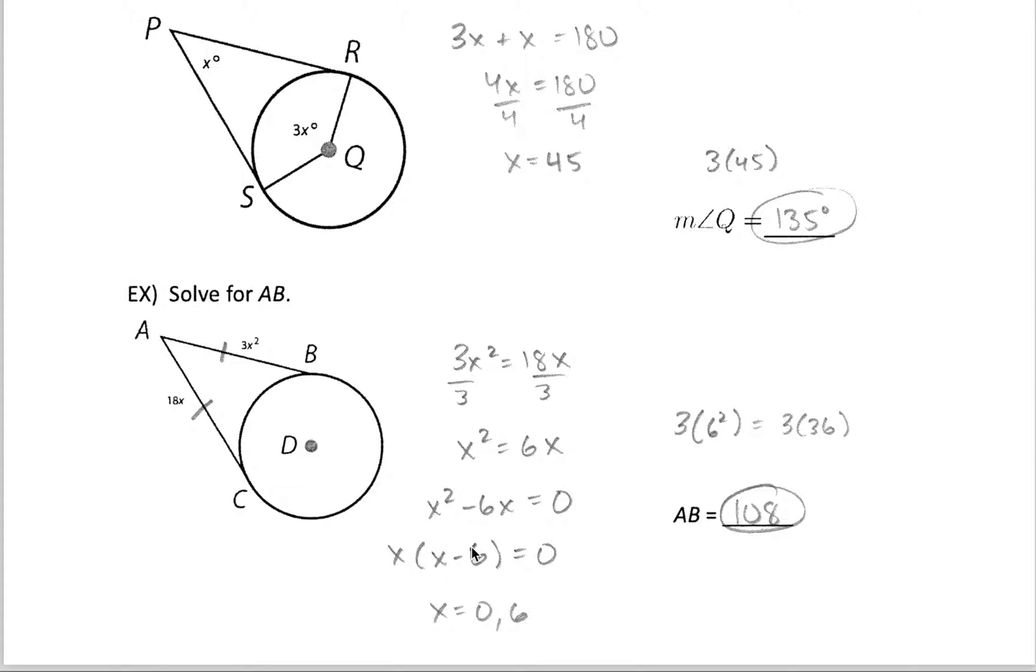And then inside, to make that zero, I would say that x is 6 because 6 minus 6 is zero. And so another solution would be positive 6. So I have two possible solutions. It tends to happen when we have a quadratic equation.